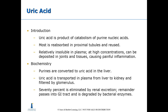Uric acid is a product of catabolism of purine nucleic acids. Purines are the DNA bases adenine (A) and guanine (G). Most uric acid is reabsorbed in the proximal tubules and reused; however, it is relatively insoluble in plasma, and at high concentrations it can be deposited in joints and tissues, causing painful inflammation. Purines are converted to uric acid in the liver, transported in plasma to the kidney, and filtered by the glomerulus. Seventy percent is eliminated by renal excretion and the remainder passes into the GI tract where it is degraded by bacterial enzymes.